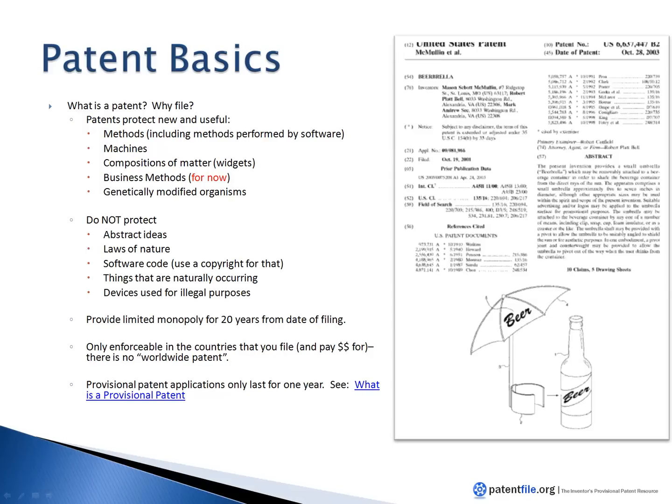What is a patent? What are some patent basics? Patents, unlike copyrights or trademarks or other forms of intellectual property, are used to protect things like methods, machines, compositions of matter — which people call widgets. You can even use them to protect software processes, such as business methods, and even genetically modified organisms.